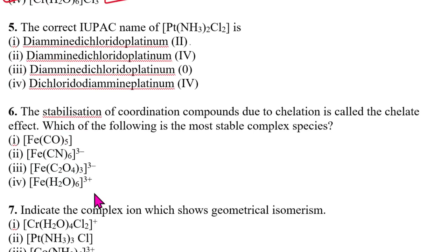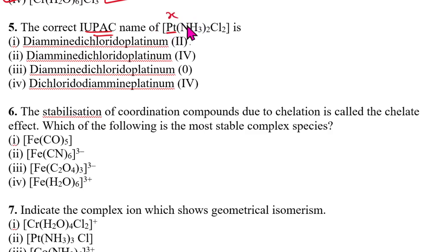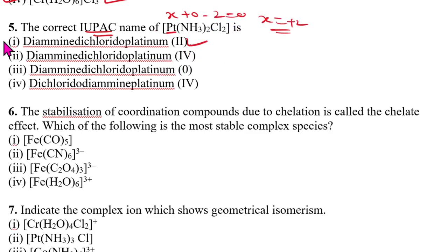Fifth question: the correct IUPAC name of Pt(NH₃)₂Cl₂. This is a neutral complex. First calculate the oxidation state of platinum: NH₃ is neutral, 2 Cl is −2, so x − 2 = 0, giving x = +2. The name is diamminedichloridoplatinum(II). The answer is option 1.